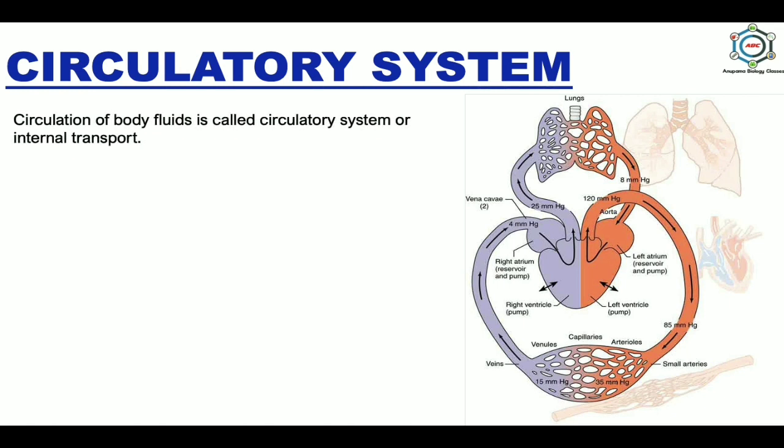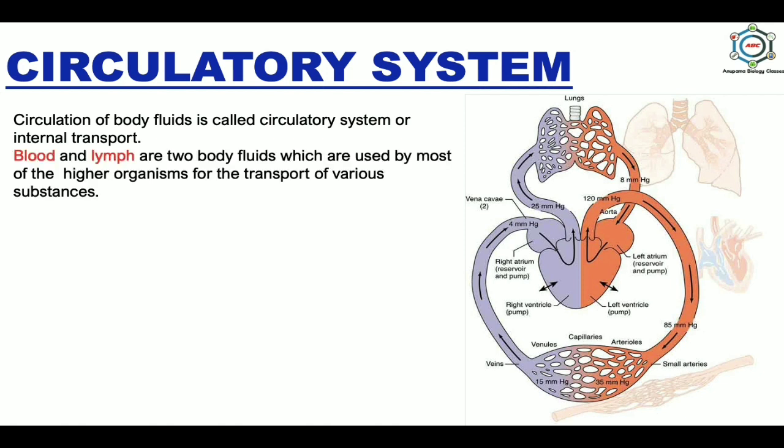Now the circulatory system. Circulation of body fluid is called the circulatory system, which is also known as internal transport. Body fluids in our body are of two types: first is blood and second is lymph, which help in the transport of various substances in our body.